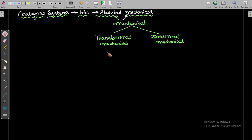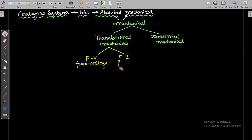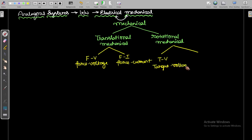Under translational mechanical systems we have force-voltage analogy and force-current analogy. In rotational mechanical systems also we have torque-voltage analogy and torque-current analogy. These are the different analogies we are going to see.